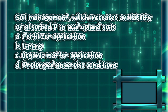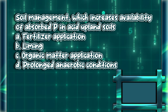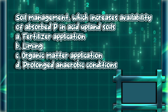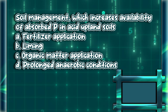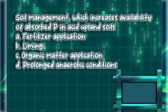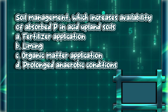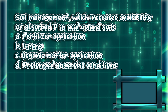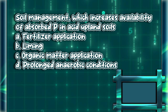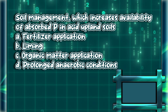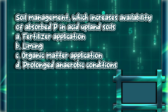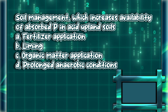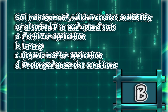Soil management which increases availability of absorbed phosphorus (P) in acid upland soils. A. Fertilizer application. B. Liming. C. Organic matter application. D. Prolonged anaerobic conditions. The answer is letter B.